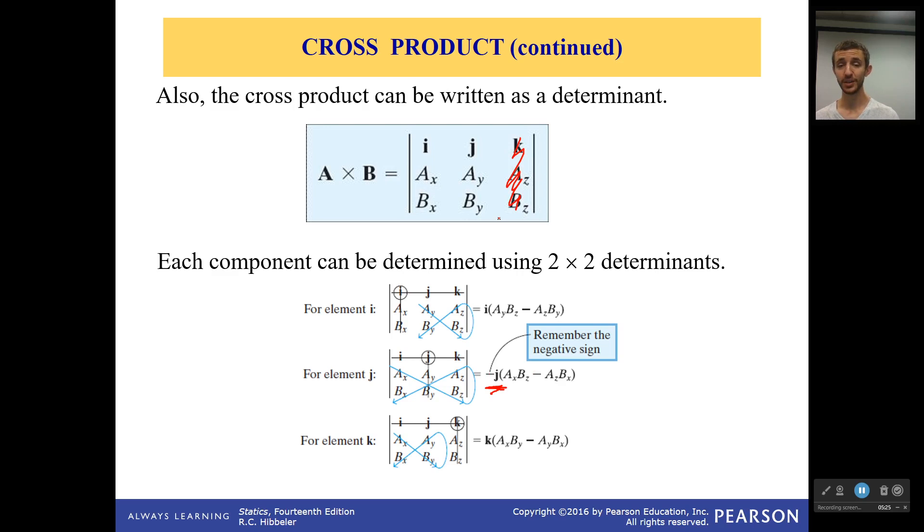But with this, you eventually will get three components: an i component, a j component, and a k component. This is your moment vector. And it is perpendicular to both of your original vectors. That's important. It's perpendicular to both of your original vectors. And with that, you have the cross product. You can start solving things. It works out very well.